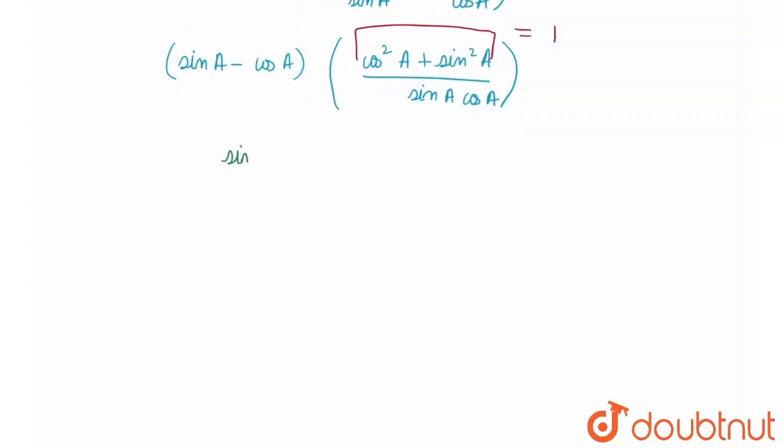Therefore, I'll be left with sin A minus cos A whole divided by sin A cos A.